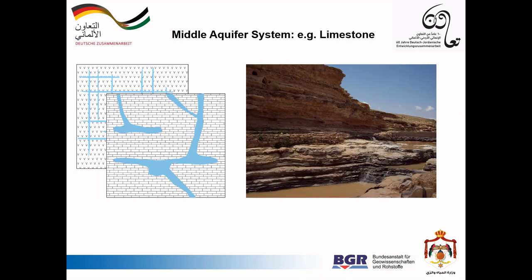The middle aquifer system is the most important in Jordan. More than half of all groundwater is extracted from these formations. The aquifer consists mainly of limestone, where the water flows through cracks and fractures and even sometimes through caves and underground channels.